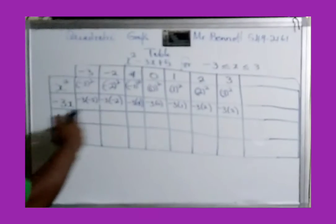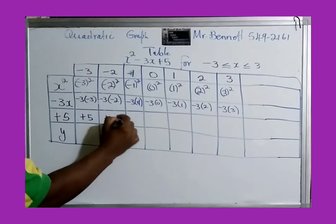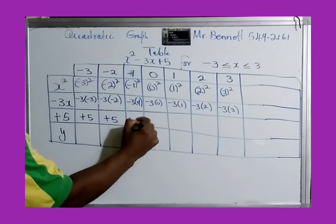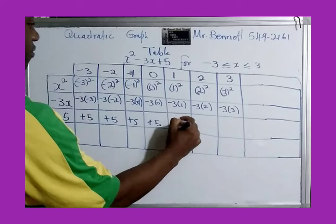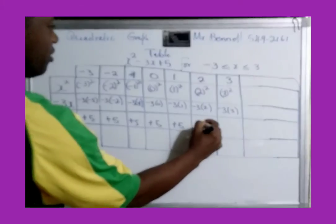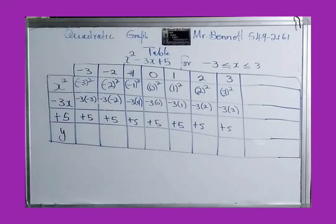Now we have plus 5. There is no x in this term, so we just add 5 for every column across the row.